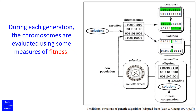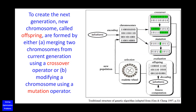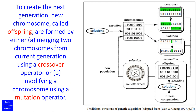During each generation, the chromosomes are evaluated using some measures of fitness. To create the next generation, new chromosomes, called offspring, are formed by either: A) merging two chromosomes from the current generation using a crossover operator, or B) modifying a chromosome using a mutation operator.